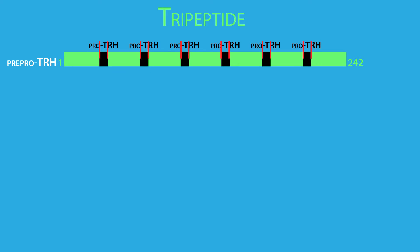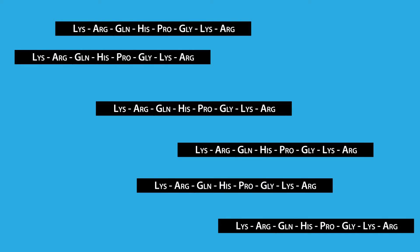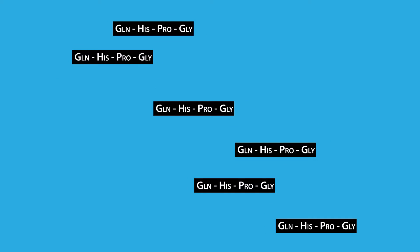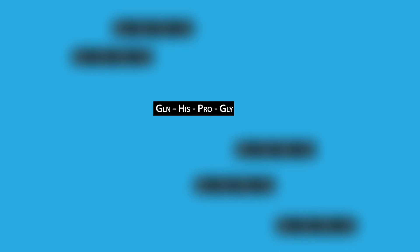First, the six pro-TRH peptides are cleaved from the larger pre-pro-TRH precursor. Next, the peptide bonds between the arginine and glutamine and between the glycine and lysine are enzymatically cleaved, which yields six 4-amino acid peptides. Finally, the glycine is enzymatically converted to an amide, while the glutamine is converted into a pyroglutamine, which produces the final TRH tripeptide.